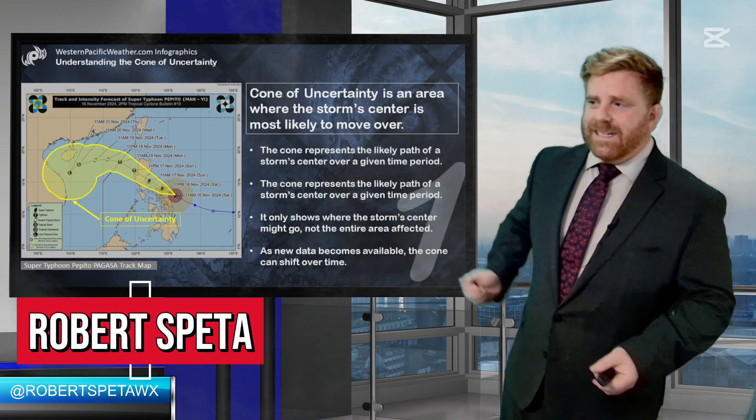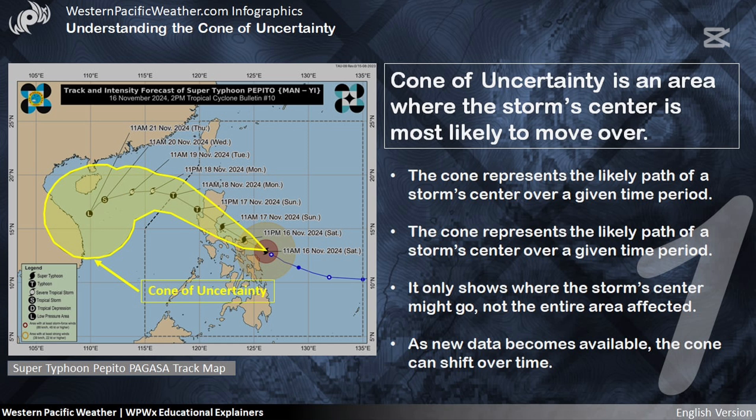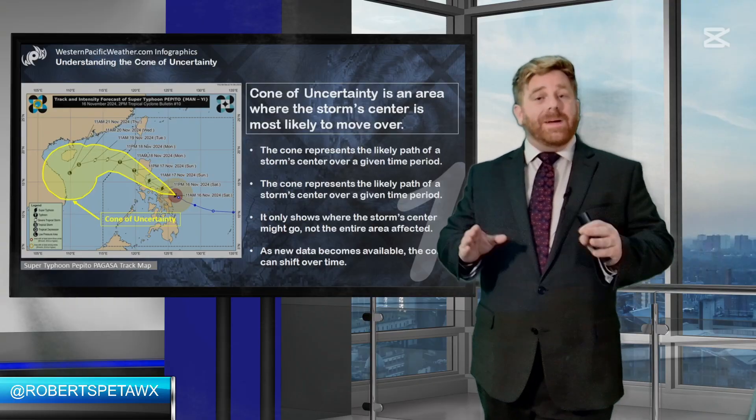The cone of uncertainty is an area where the storm center is most likely to move over. The uncertainty part is the forecast error — where it could go north to south, east to west, as far as that low level center is concerned. The cone represents that likely path, and as new data comes in and becomes available, that cone can shift just a bit. Basically, it means the center could move over one of those areas.